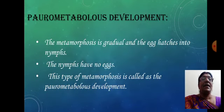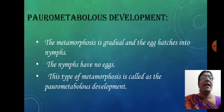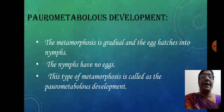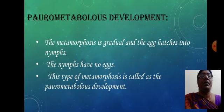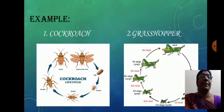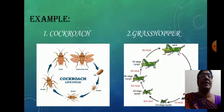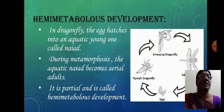In paurometabolous development, it is gradual, and when the egg hatches into the nymphs, the nymphs are immature. This type of metamorphosis is called paurometabolous development. Two examples are cockroach and grasshopper.